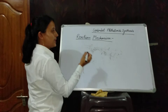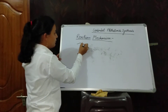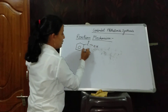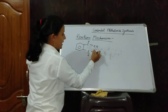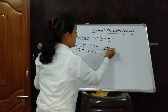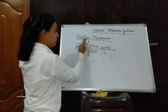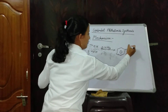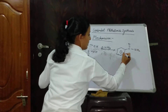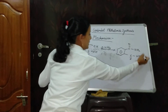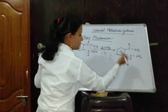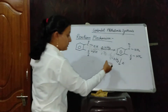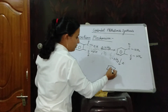First we prepare phthalimide. Phthalimide can be prepared from phthalic acid. When ammonia is passed through phthalic acid solution, there will be formation of an addition product. When this product is heated, there will be removal of ammonia gas and formation of phthalimide.